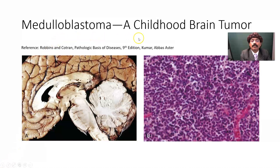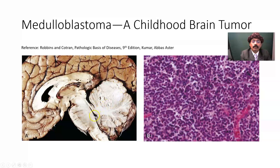Here, medulloblastoma — a childhood brain tumor. We are looking at the central part of the cerebellum where there is a tumor. It involves the vermis, the junction between the two cerebellar hemispheres. It may erode the meninges and even the tentorium cerebelli. It may damage functional areas like the visual cortex, go to the fourth ventricle, irritate the vomiting center, damage the brain stem area, and cause blockage of the cerebrospinal fluid, which may lead to hydrocephalus.